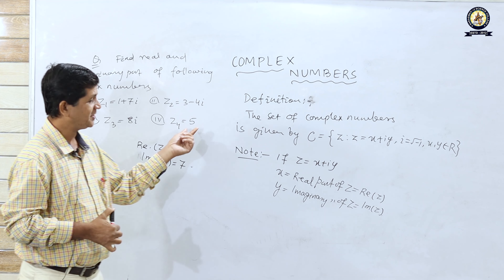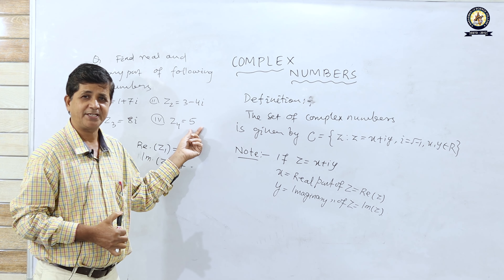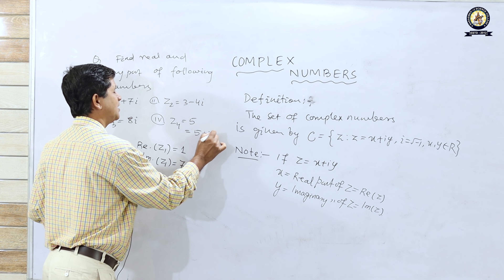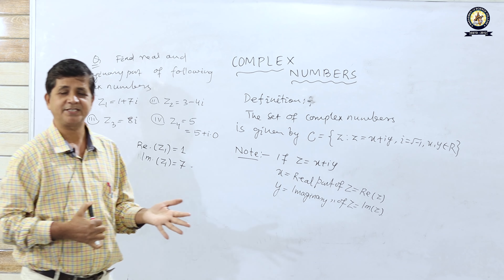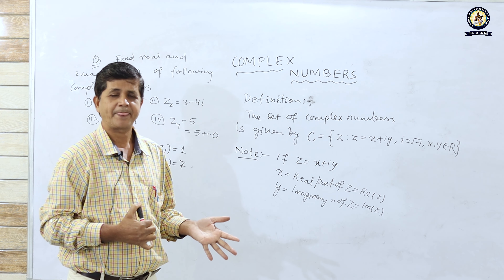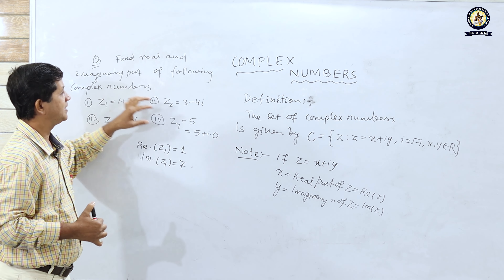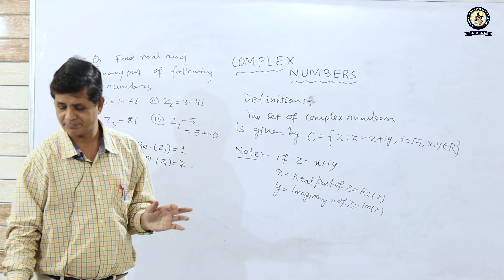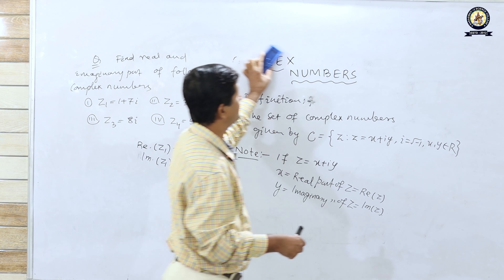Note that 5 is a real number and it can be expressed as 5 + i0. So every real number can be expressed in complex number form. But every complex number such as 8i, 1 + 7i, or 3 − 4i cannot be expressed in real number form.